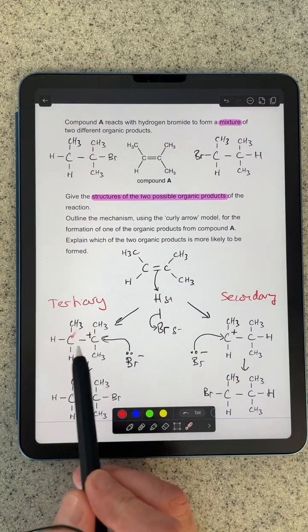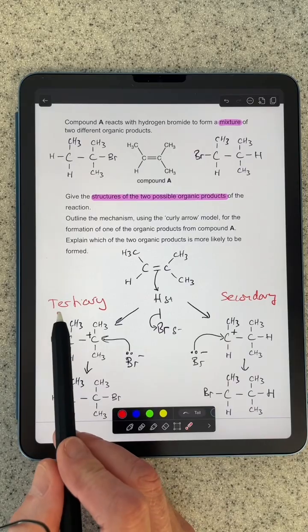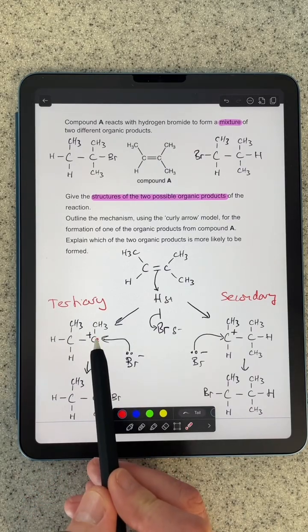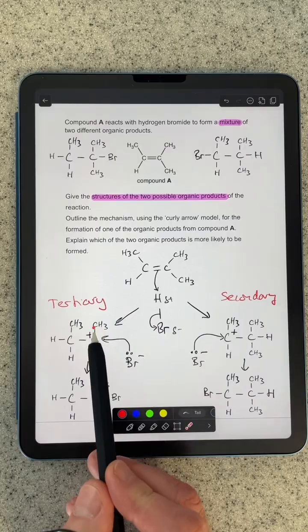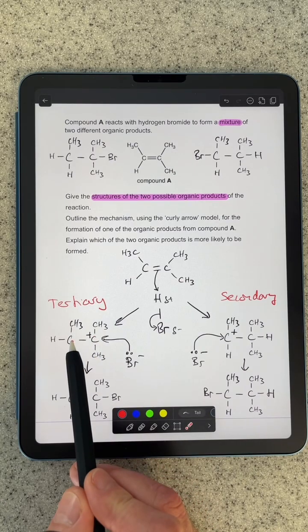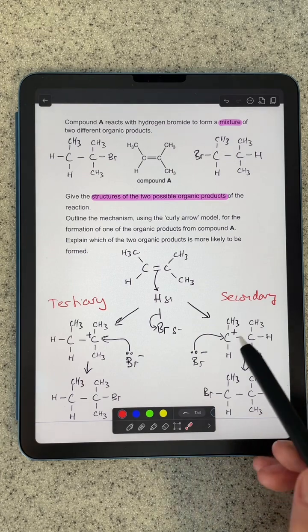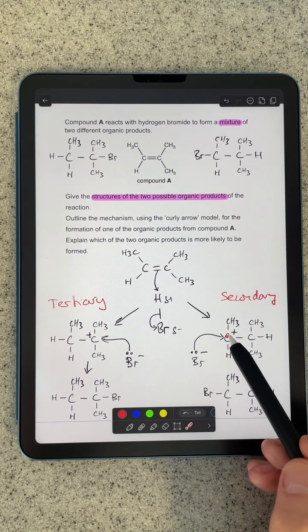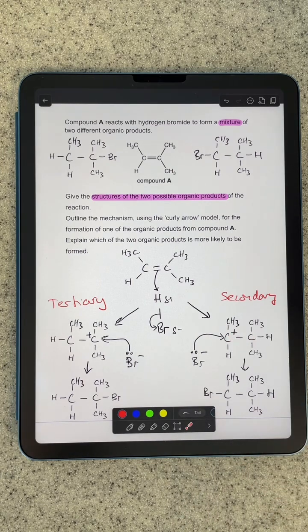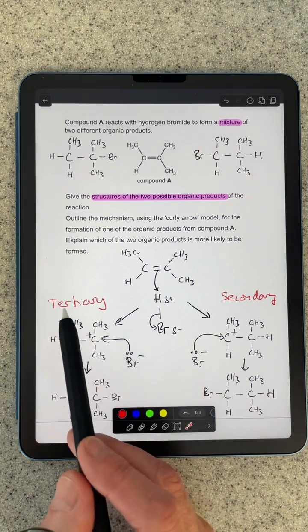So this carbocation here on the left is what we call a tertiary carbocation, that's because the carbon with the positive charge is bonded to three carbons directly. This carbocation is a secondary carbocation because the carbon with the positive charge is only bonded to two. So the next thing I've got to think about is which is more stable, that's the tertiary one.